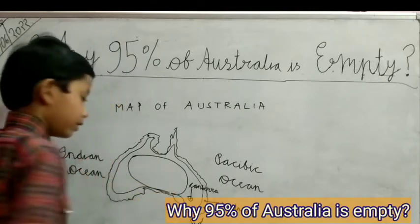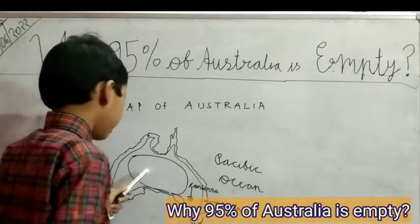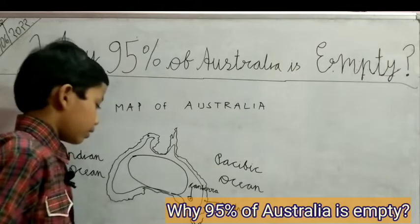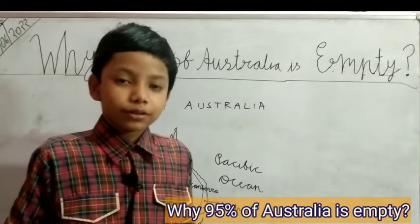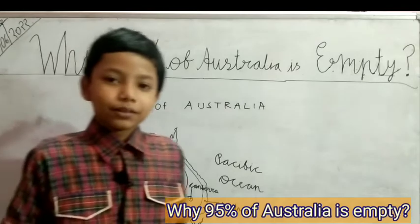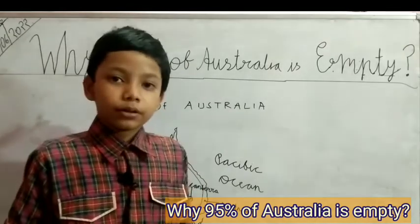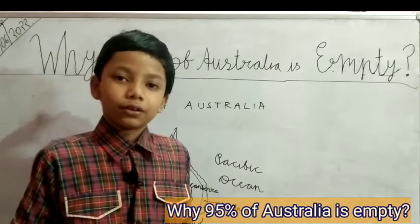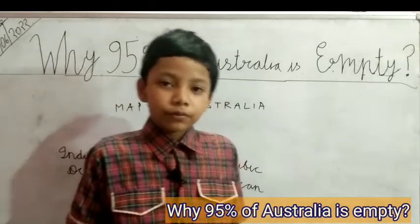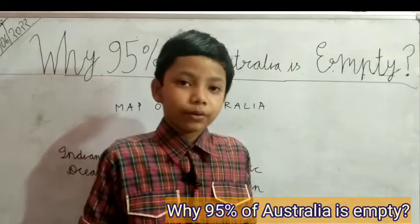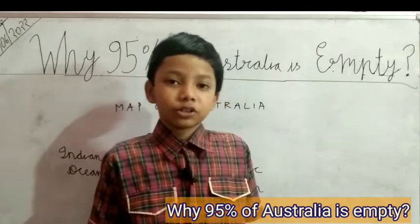There's literally no water in the middle of Australia. And, you know, Australia has kangaroos. Kangaroos jump. But why? Well, when their first ancestors were formed, kangaroos used to climb on trees.